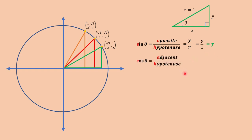For cosine theta, we have adjacent over the hypotenuse. So we have x over r — adjacent and hypotenuse. So we would be having x over 1. Therefore, cosine theta is equal to x.